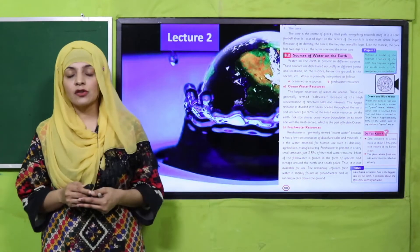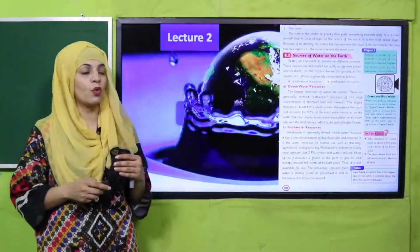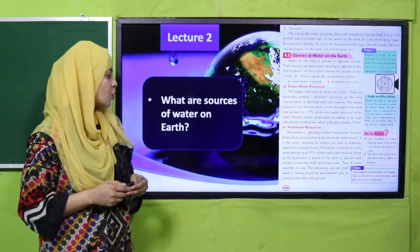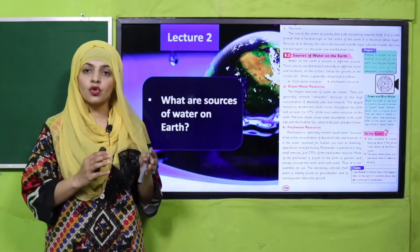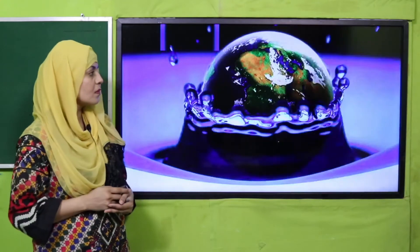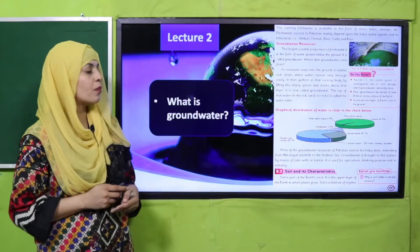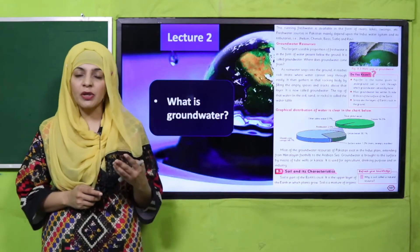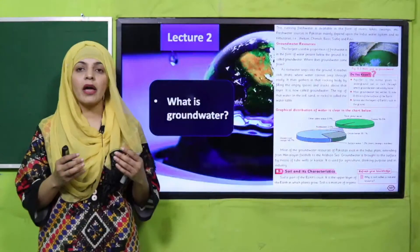Then we moved forward towards lecture number two, jisme hamne resources of water jo ke earth pe present hain, earth crust pe present hain, unko discuss kiya tha. So what are the sources of water on earth? These are oceanic and fresh water. Then in lecture number two we also discussed ground water.